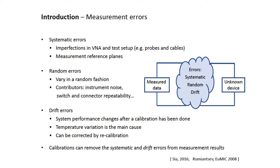There are also random errors associated with the measurement data — they vary in a random fashion. Contributors include instrument noise, switch, and connectability. There are also drift errors — for example, system performance changes after calibration has been done. Usually a temperature variation is the main cause. These drift errors can be corrected by re-calibration.